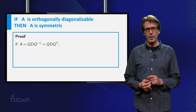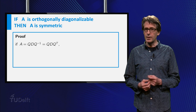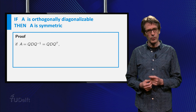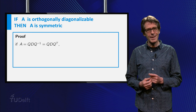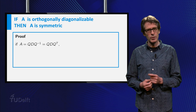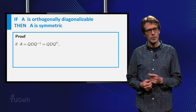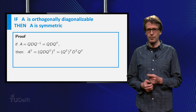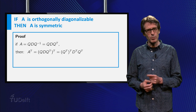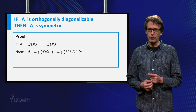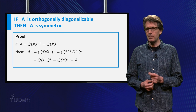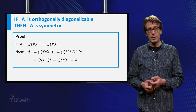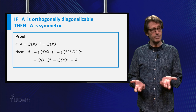The converse of the main theorem is also true and it is proved in two lines, as follows. If A is orthogonally diagonalizable, then A equals Q D Q inverse with Q orthogonal, so A equals Q D Q transpose. Now use the rules of the transpose operator and the simple fact that the diagonal matrix is symmetric, and you see that the transpose of A equals A, so A is indeed symmetric. Nice!